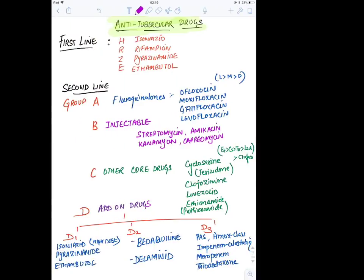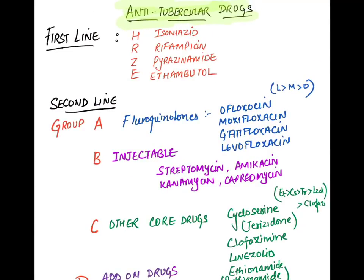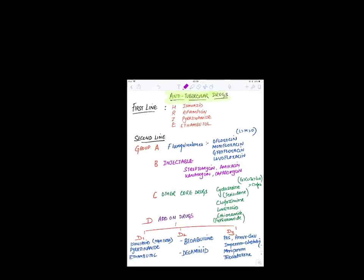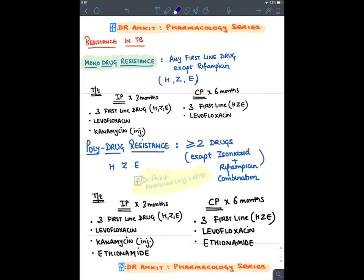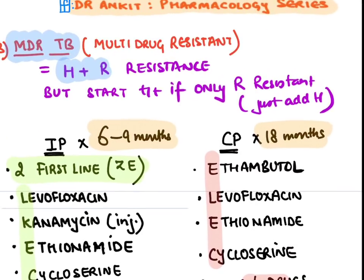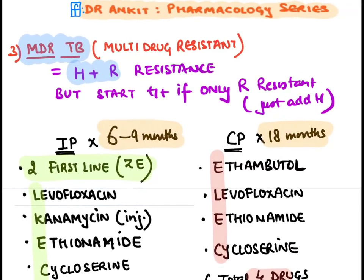Second-line drugs are given in resistant cases. MDR-TB (multi-drug resistant TB) is defined as isoniazid plus rifampicin resistance. But in practice, we start MDR treatment even if we find only rifampicin resistance. So the definition is H plus R resistance, but we start MDR-TB treatment on rifampicin resistance alone.